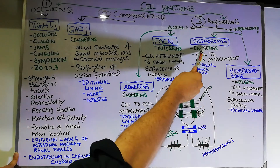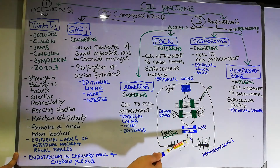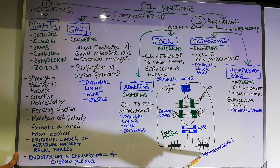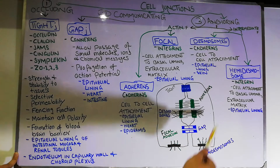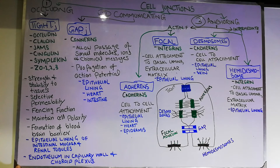Then we have desmosomes, which are made of cadherin proteins and provide cell-to-cell attachment. Hemidesmosomes are basically half the desmosome — in a desmosome both sides are present, but in a hemidesmosome only one side is taken. They provide cell-to-basal-lamina or extracellular matrix attachment and are present in the epithelial lining. There are many more things to discuss regarding cell junctions, but the pathology, pathophysiology, and diseases will be covered in coming lectures. Hope you have understood and got a good idea of cell junctions. Thanks a lot.